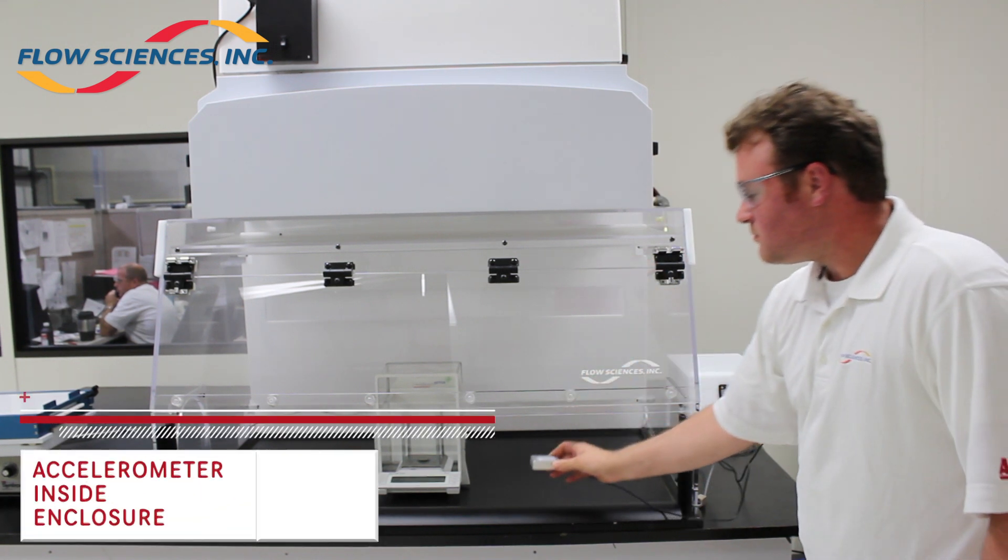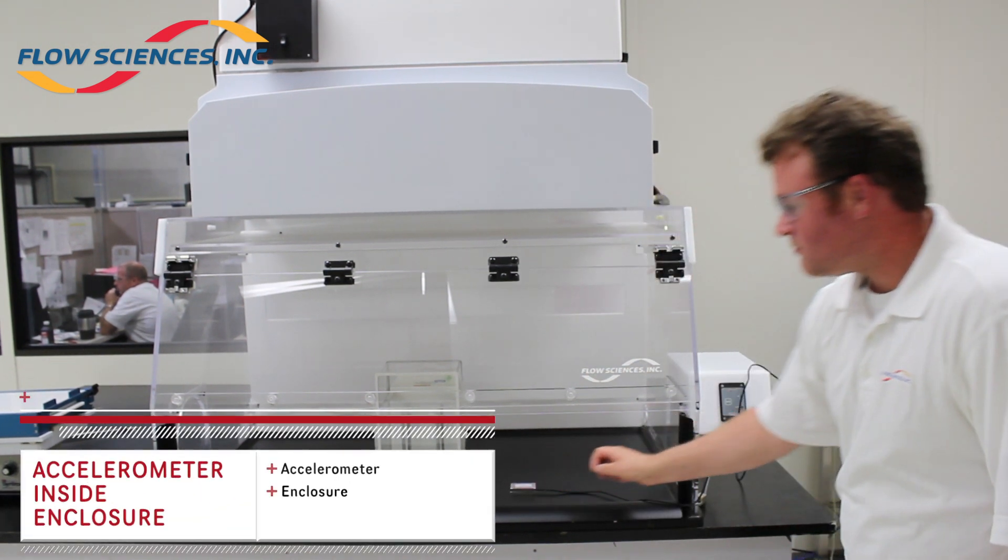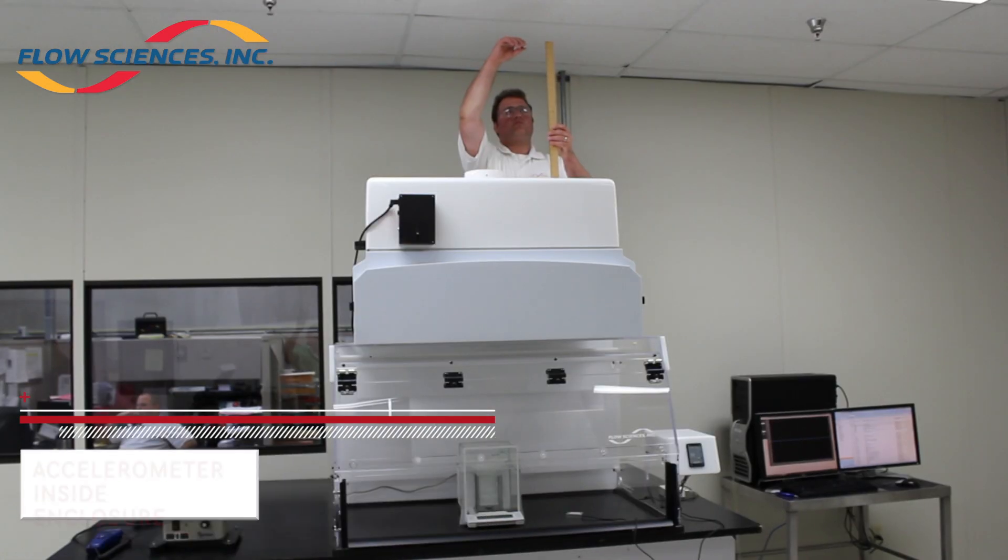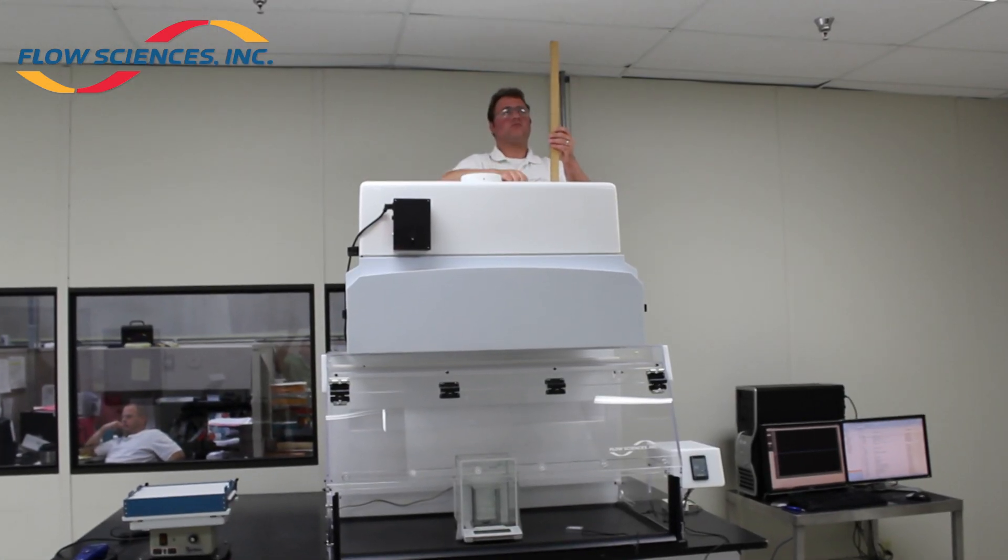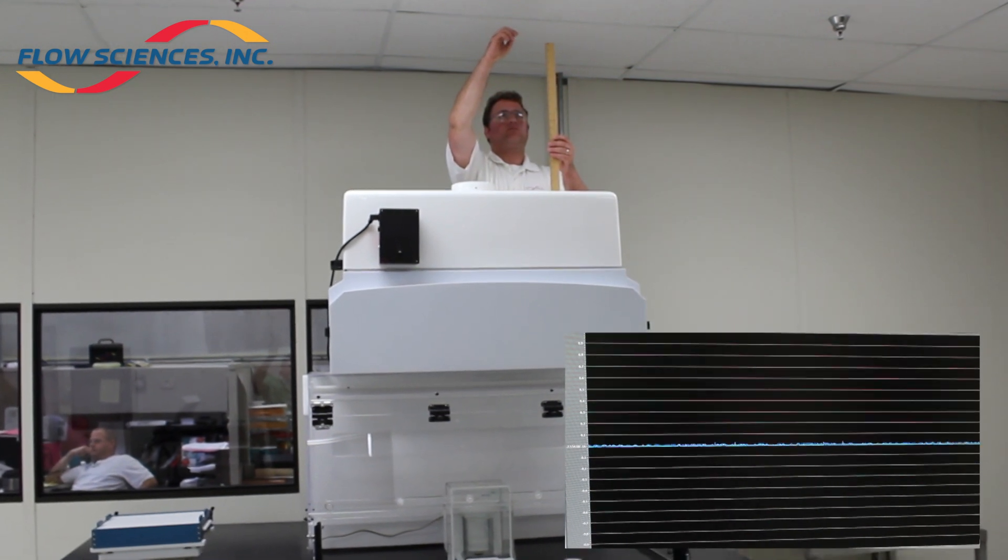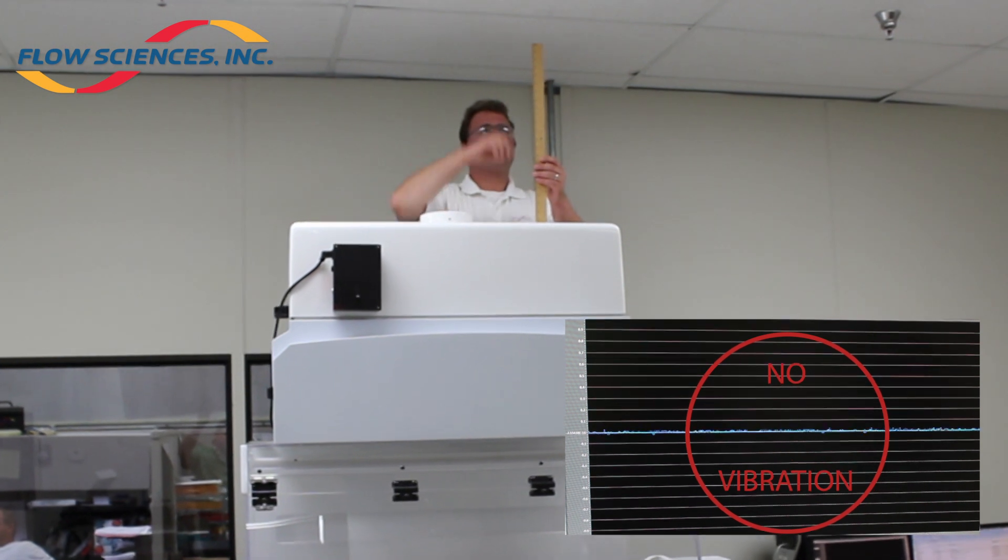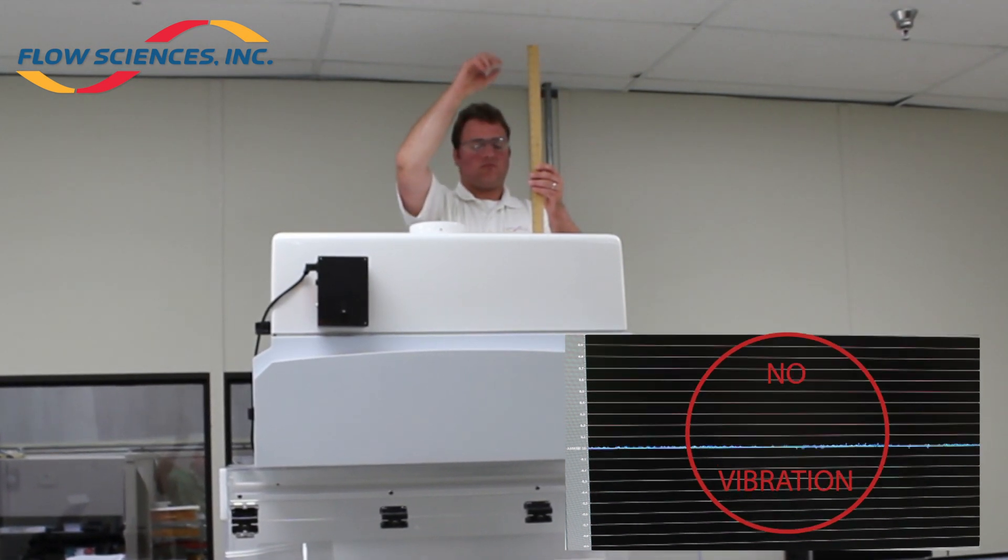Test 7: With the fan still turned off, the sensor was placed inside the enclosure centered on the phenolic work surface. The same steel ball was again dropped from a height of 2 feet onto the top of the fan unit. This was to see if any vibrations would travel to the enclosure's work surface.